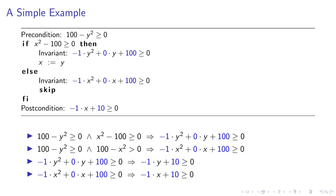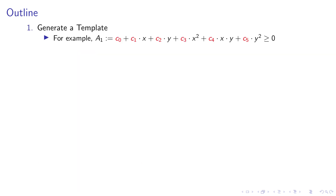This ends the solution. We now have the inductive invariant we were looking for — we take the synthesized values and plug them back into our template. Our general approach is exactly what you saw in that example, except we automate everything. All we want the user to give us is the degree of the polynomials.